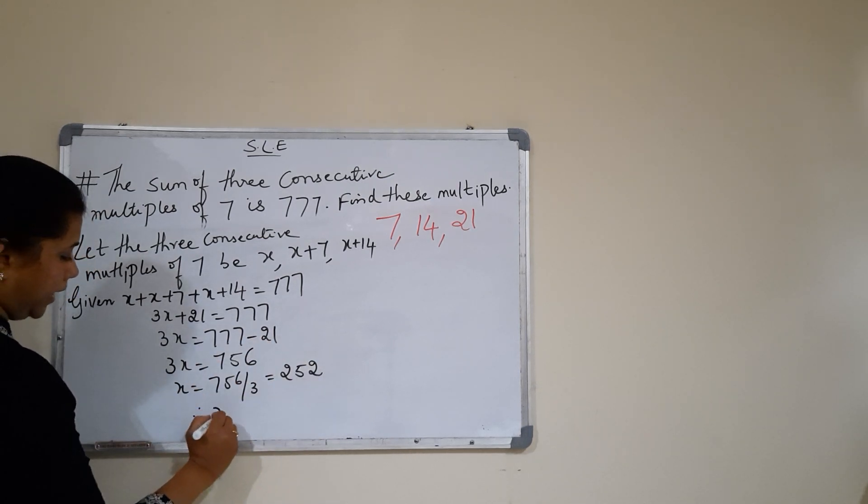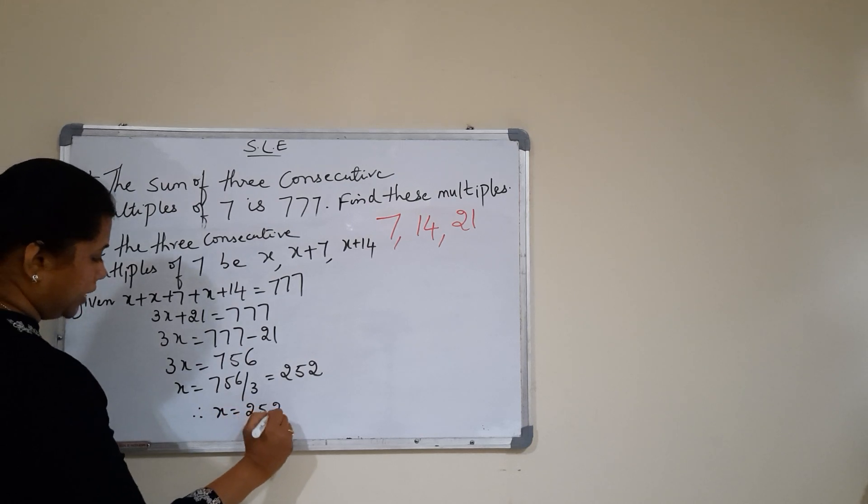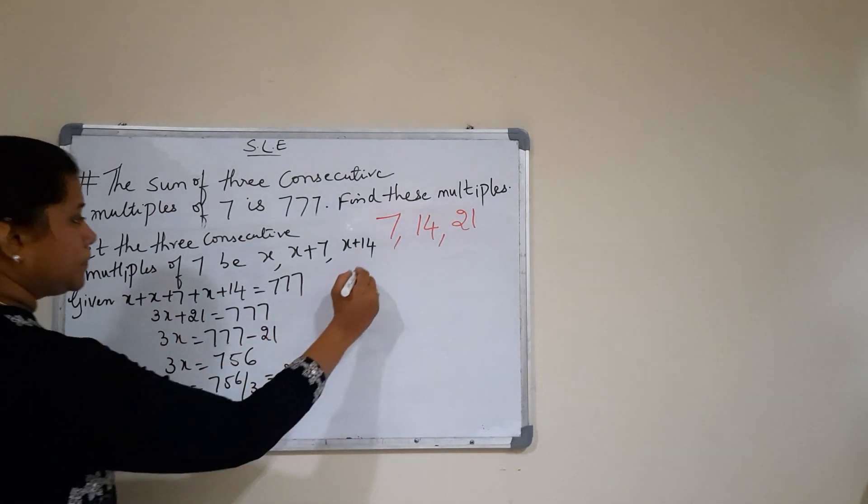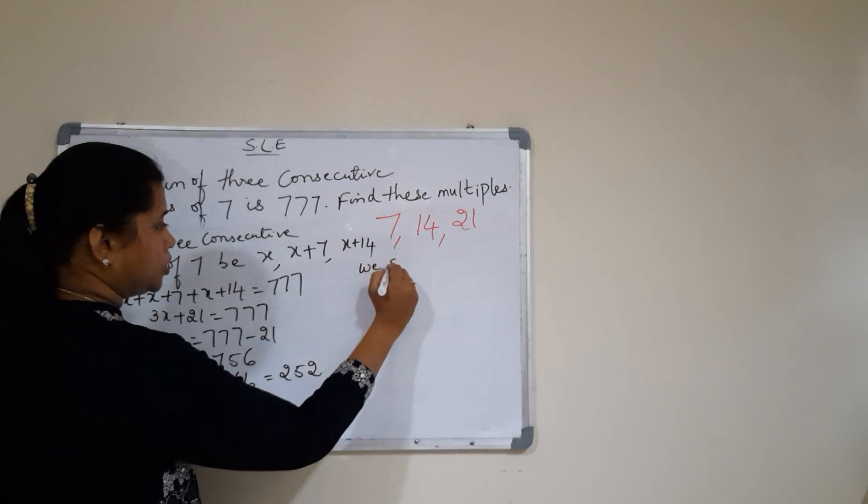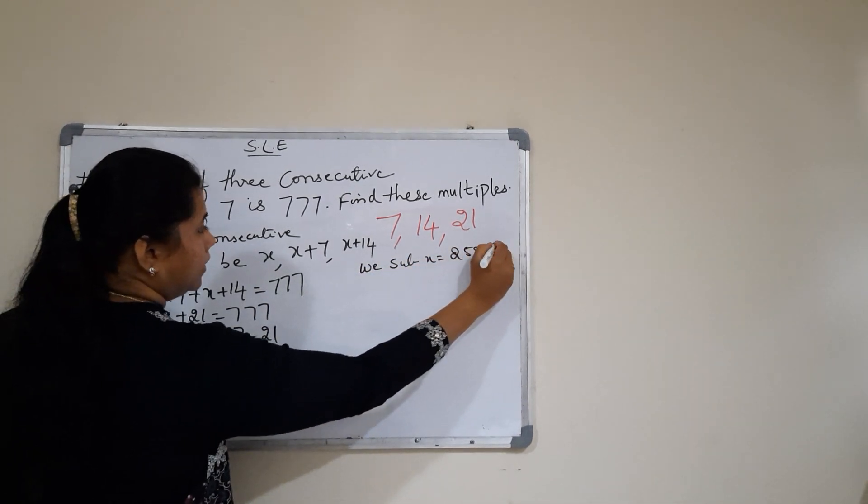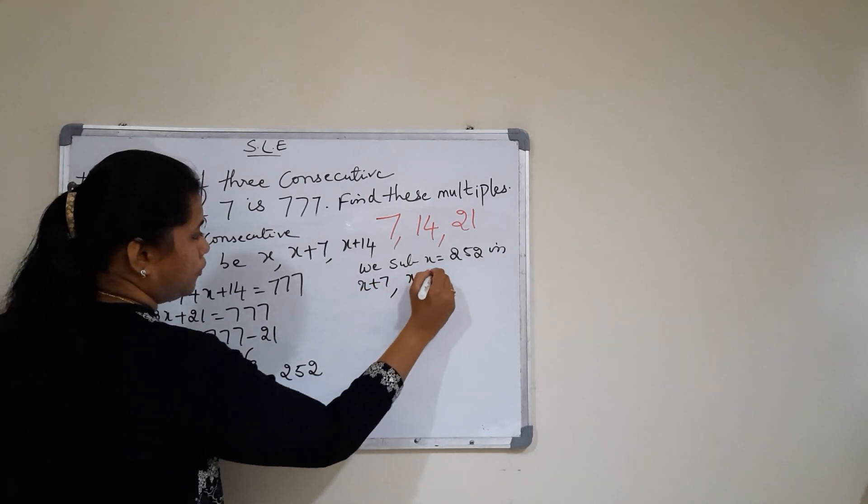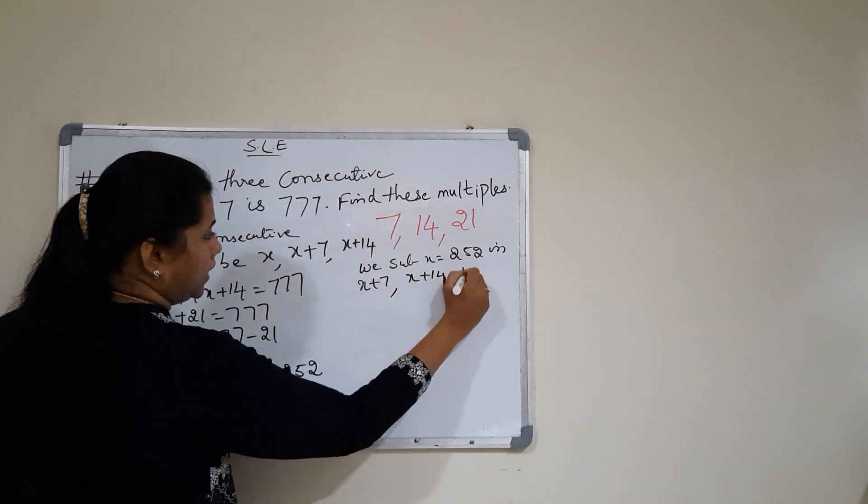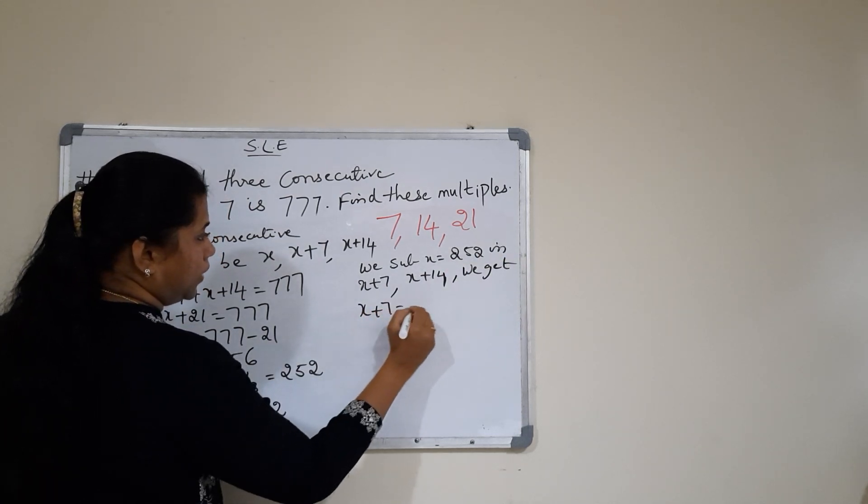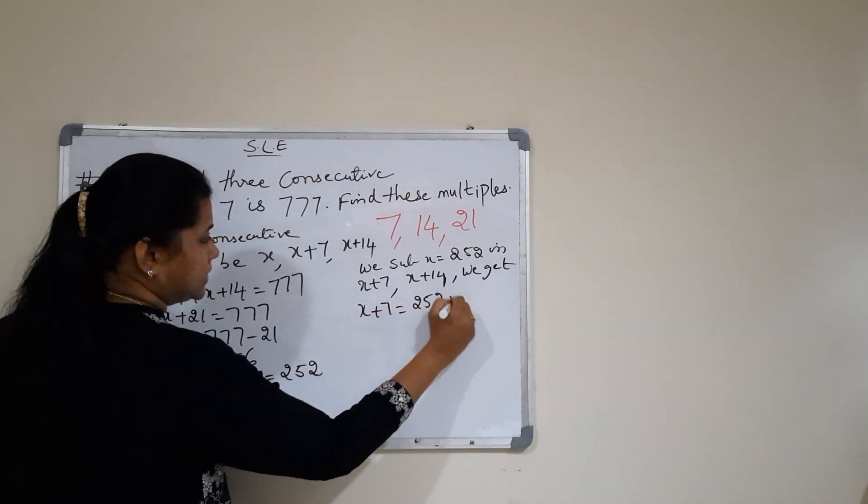So we got x value as 252. Let us substitute this x value 252 in x plus 7 and x plus 14 to get the other multiples. We substitute x is equal to 252 in x plus 7, comma x plus 14. We get x plus 7 is equal to 252 plus 7, that is 259.